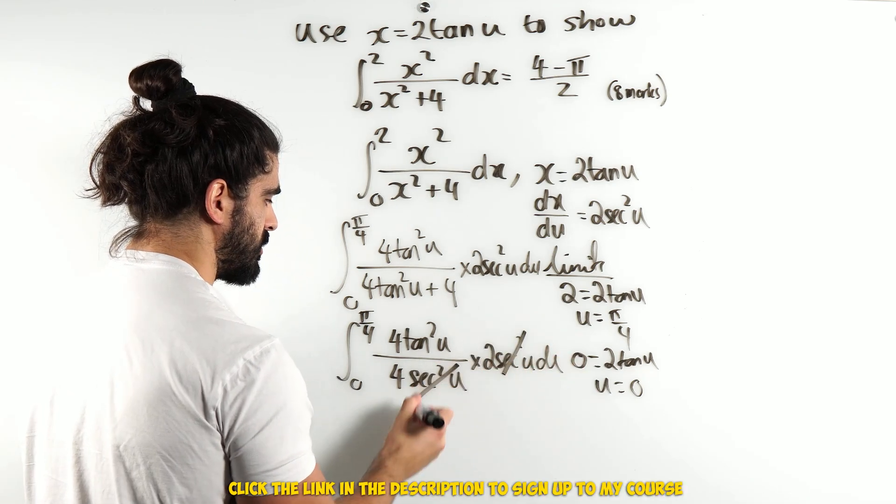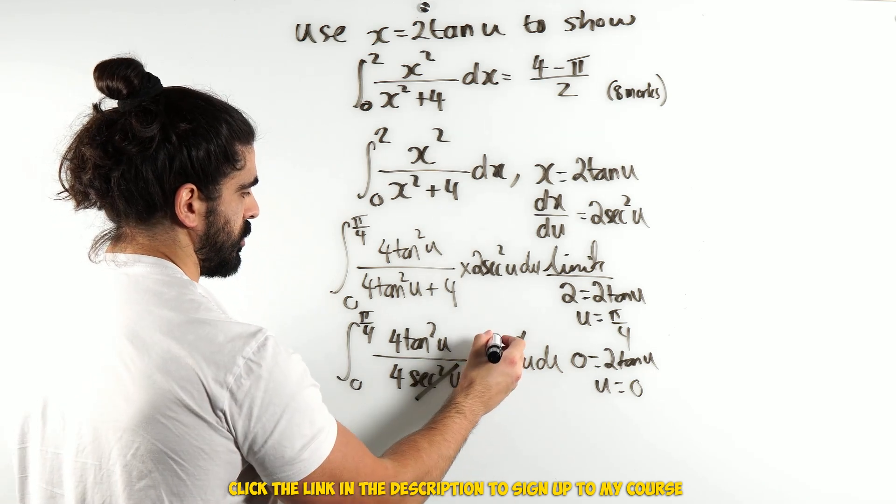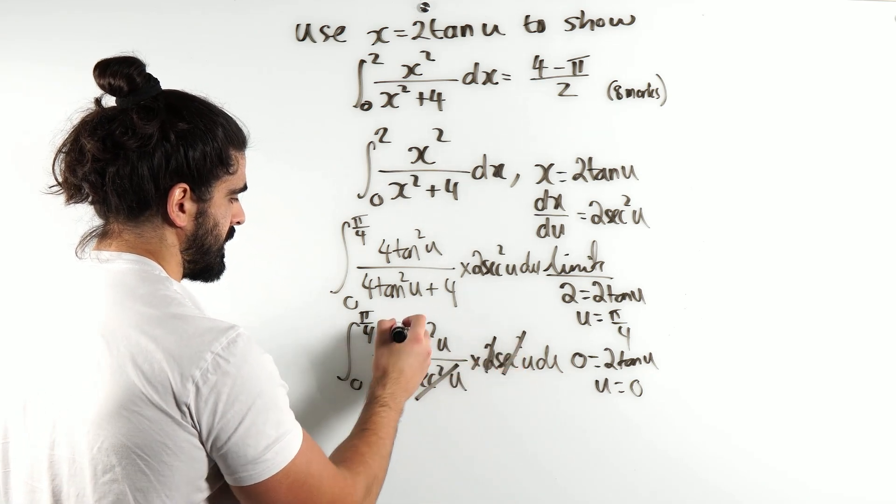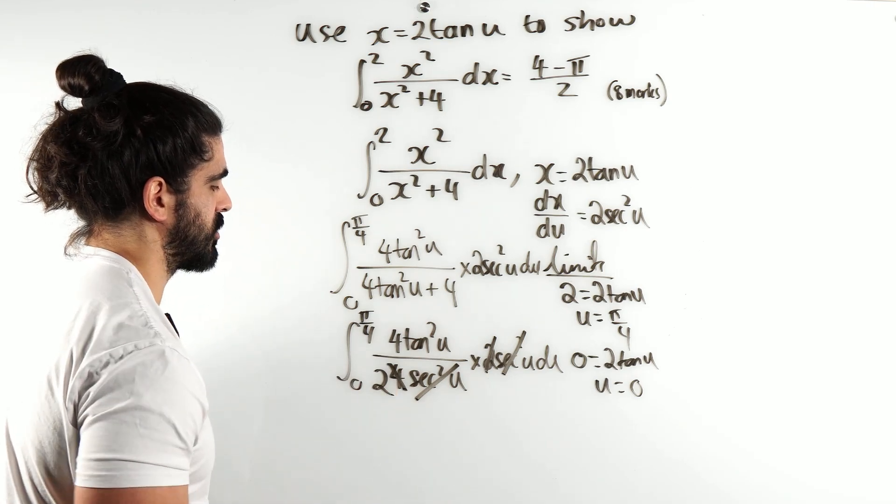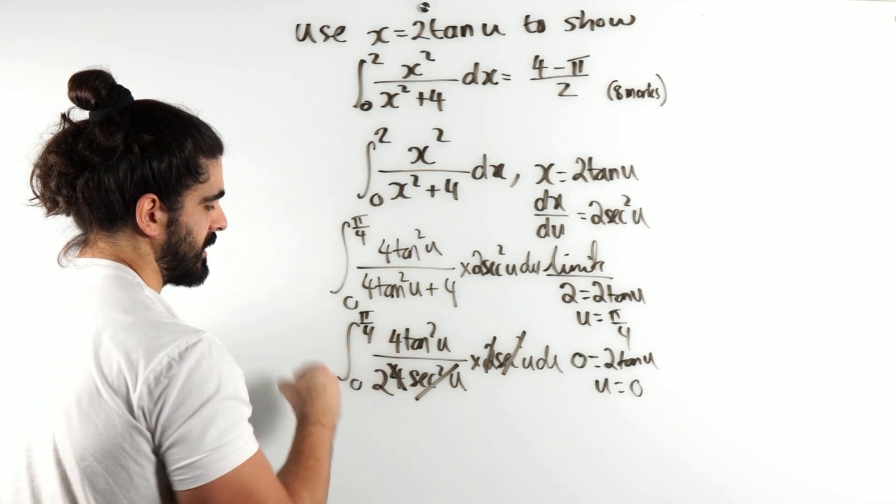Sec squared goes. We also have 2 canceling the 4 twice. Then we have 4 divided by 2 is just 2. That 2 I'm going to take outside the integral.